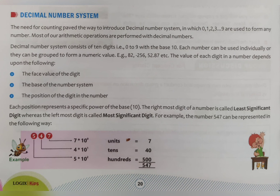Now, the decimal number system. The need for counting paved the way to introduce the decimal number system. In the decimal number system, the digits 0, 1, 2, 3, 4, 5, 6, 7, 8, and 9 — up to 9 — are introduced to count things.